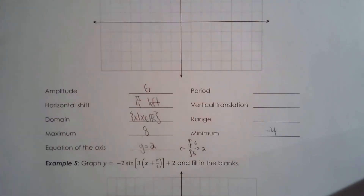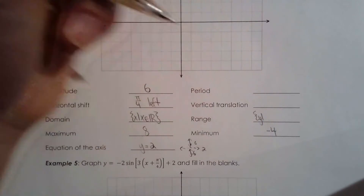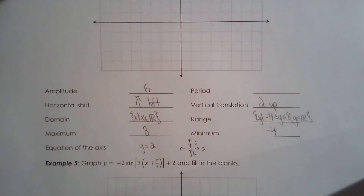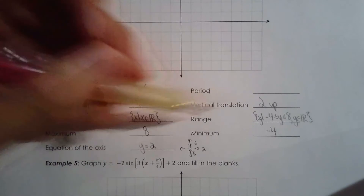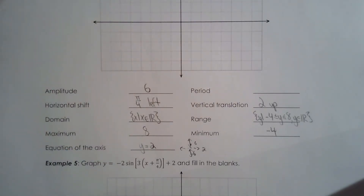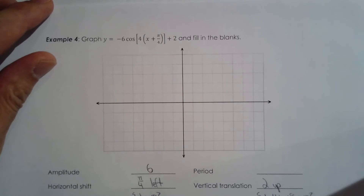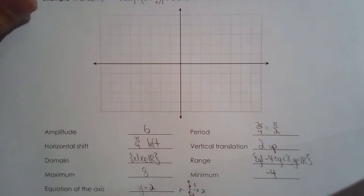The range is from negative four to eight — the y-values of this wave bounce between those values. The vertical translation is two units up because the equation of the axis is y equals two. The period: since the k value is four, the period is two pi over four, which equals pi over two.